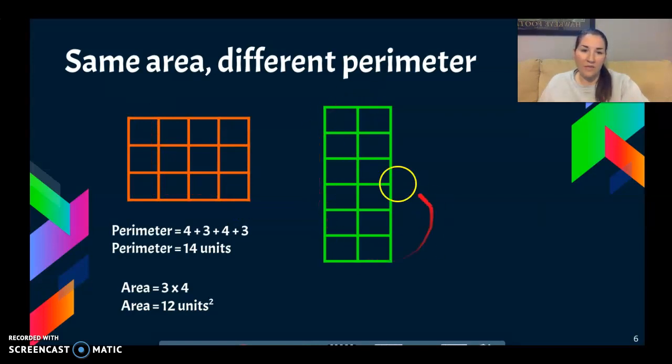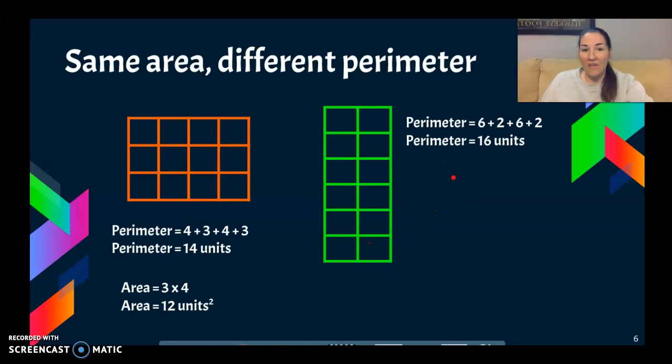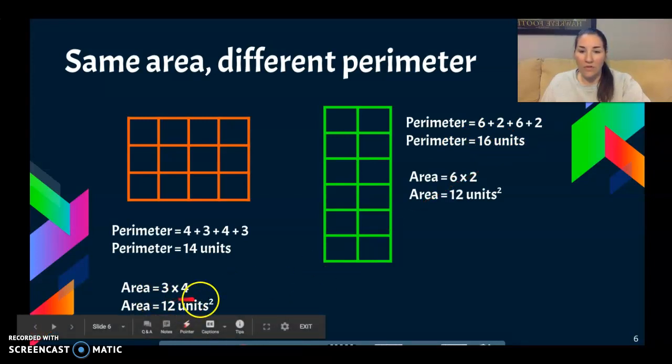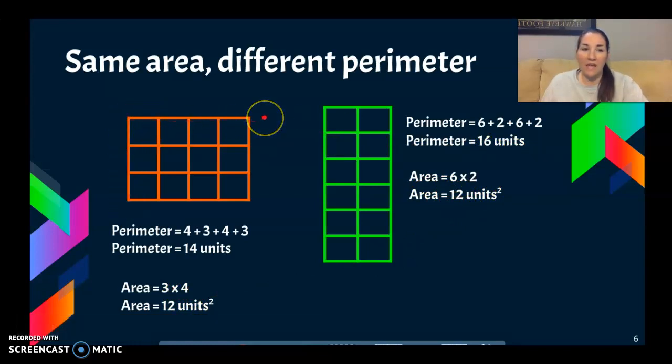Now if I look at the green rectangle over here and I look at the perimeter, you can pause and take a moment to find the perimeter of that one on your own. I see that I have 6 squares for the length and for the width I have 2. So that goes all the way around, I do 6 plus 2 plus 6 plus 2 which is going to be 16. And if I find the area of that one, again you can pause and figure it out on your own, I would do 6 times 2 which is 12 units squared. So both of these rectangles have an area of 12 units squared, but their perimeter is different because they have different length and widths.